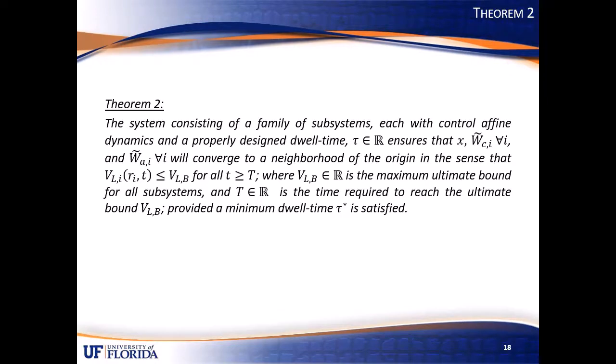Here's the theorem statement for theorem two. It says that there exists a minimum dwell time tau that each subsystem must satisfy before switching to the next subsystem, which guarantees stability of the overall switching sequence. And the capital T, which is in the second half of the statement, is the minimum time that the system will take to reach the UUB bound.